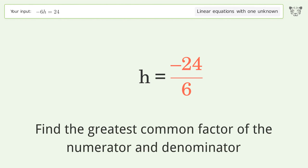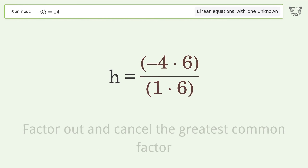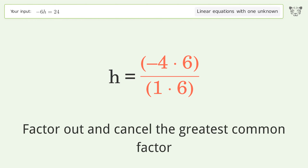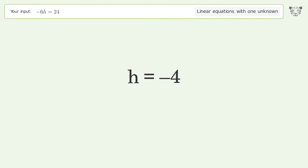Find the greatest common factor of the numerator and denominator, then factor out and cancel the greatest common factor. The final result is h equals negative 4.